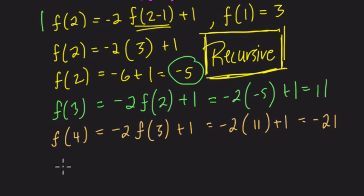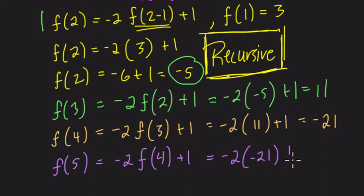That, again, we'll equal negative 2 times f of 5 minus 1, or 4. It's always the previous step of 4, plus 1. So that equals negative 2 times negative 21, plus 1.